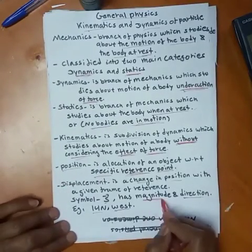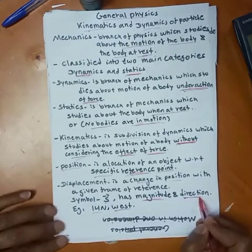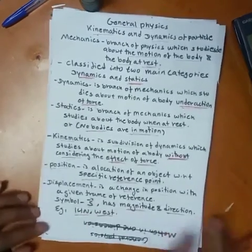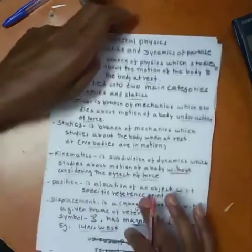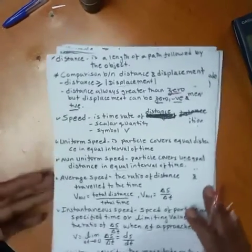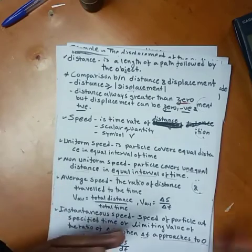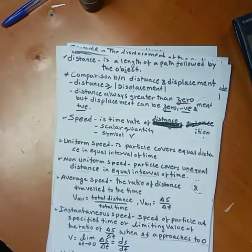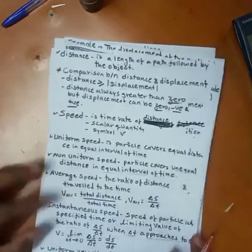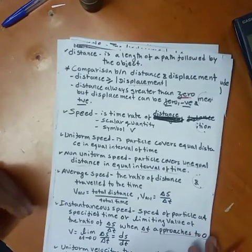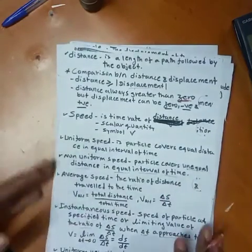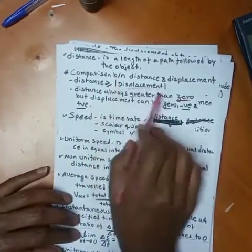Displacement has both magnitude and direction, so it is a vector quantity. Distance means the length of a path followed by an object. In other words, the total distance means the total length traveled.